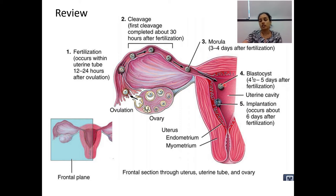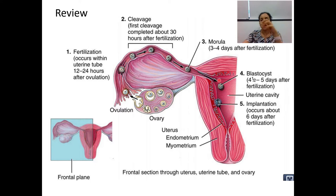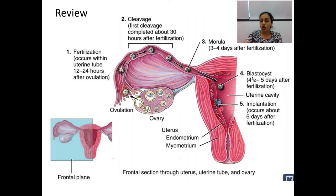Once the zygote enters the uterine cavity, fluid enters it and there is separation of blastomeres, forming an outer cell mass and inner cell mass. The outer cell mass is called trophoblast and the inner cell mass is called embryoblast. The trophoblast helps in invading the endometrium of the uterus — this process is called implantation, which occurs around six days after fertilization. The trophoblast later develops into placenta, and the embryoblast forms the proper embryo.